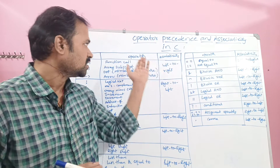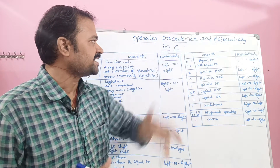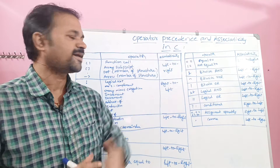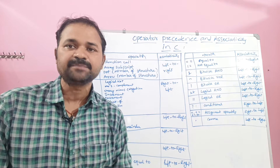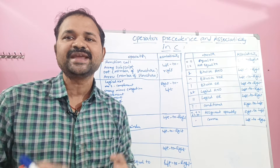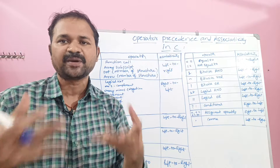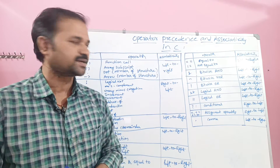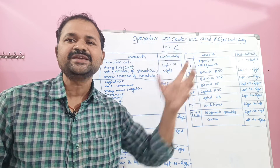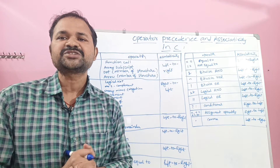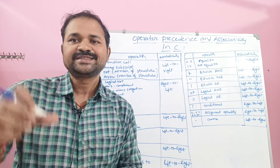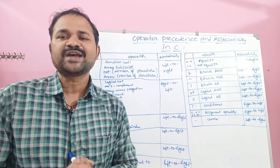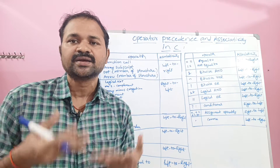Let us discuss operator precedence and associativity in C programming. Precedence can also be called as priority. An expression is a combination of operators and operands, where an operand may be a variable or constant. Precedence is mainly useful when an expression contains multiple operators — it determines which operator will be executed first, based upon the precedence or priority.